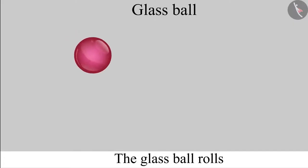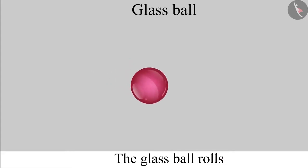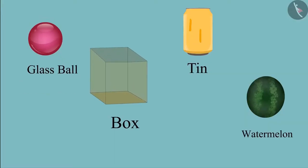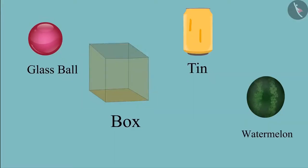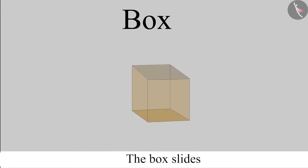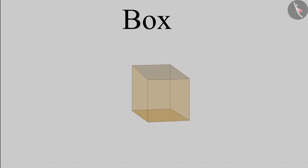This is a glass ball. It can only roll because its surface is round. This is a box. It can only slide because none of its surface is round.